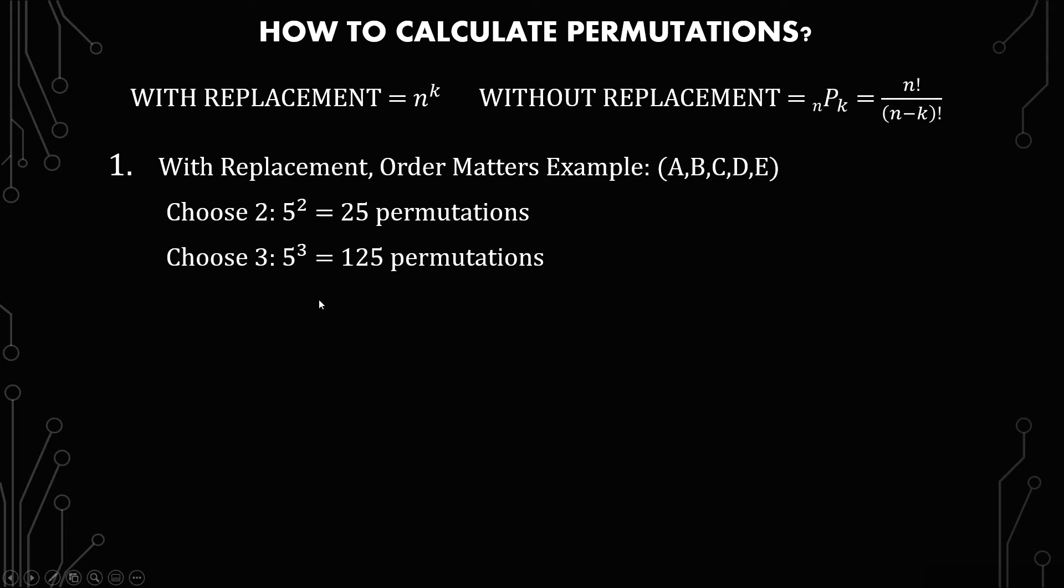So this is how it looks like when you choose three, you know 5 to the third and then 5 to the fourth.